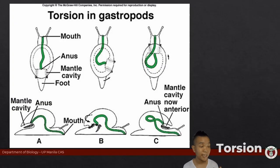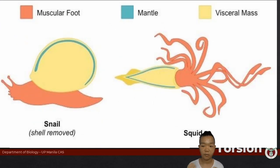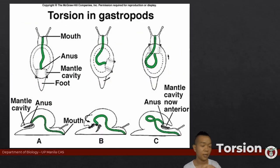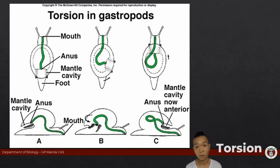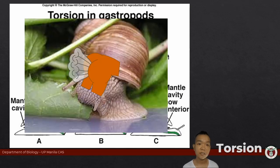Gastropods are unique because they exhibit torsion. Torsion is when the visceral mass of your gastropod — which is everything else except for the head and the foot — rotates about 90 to 180 degrees and repositions the mantle cavity, osphradium, gills, and unfortunately also the anus, to the side of the body or right on top of the head. It's just an unfortunate consequence, of course.